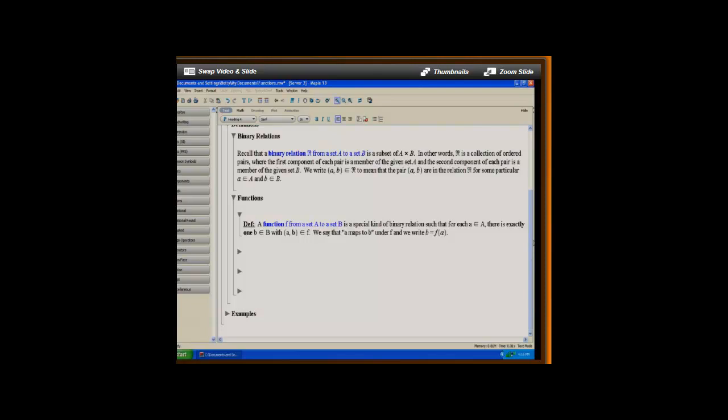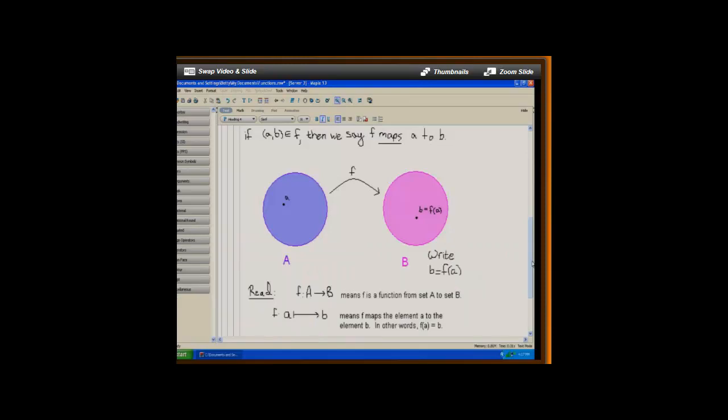It's helpful sometimes to visualize this. So here the purple circle A represents the set A and the pink circle represents the set B. The function is represented by the arrow between them. And so here we're mapping the element little a in A to little b in B with the function F, and we write B equals F of A.